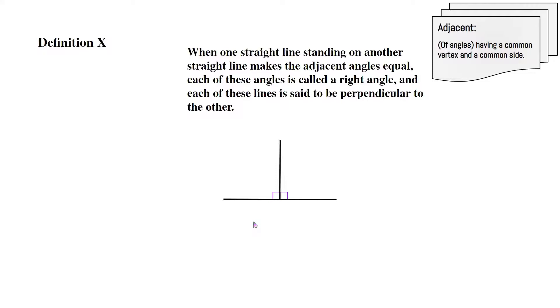So what this is saying is, let's say we have a black line over here, and then we have another black line standing on this other black line. Now if these two angles on the sides are equal, then they both will be 90 degree angles.